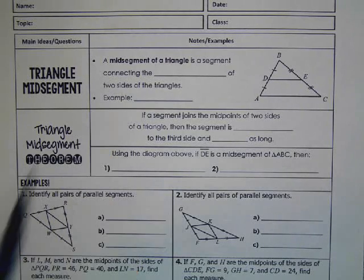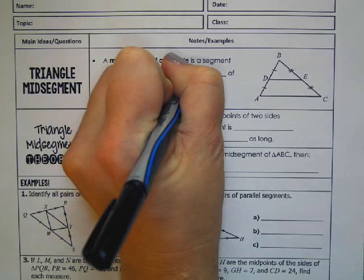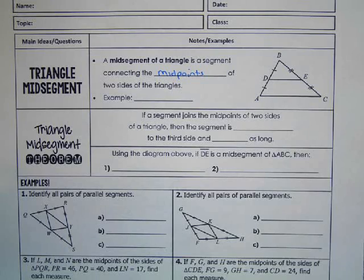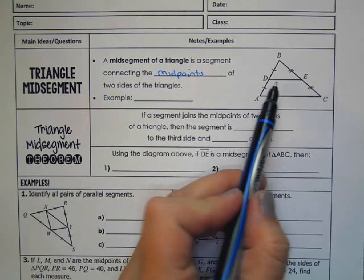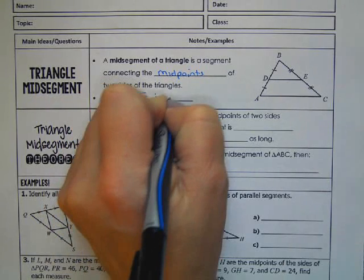The midsegment of a triangle is a segment connecting the midpoints of two sides of the triangle. So, for example, DE is a midsegment.